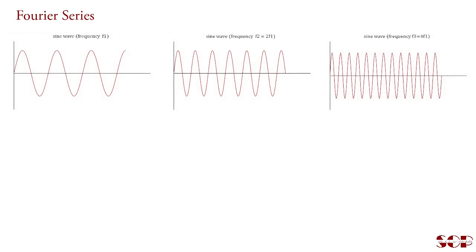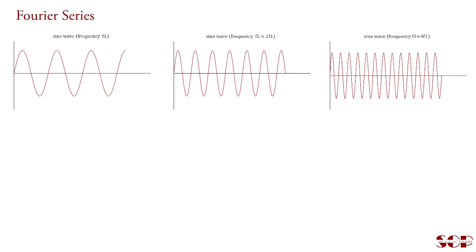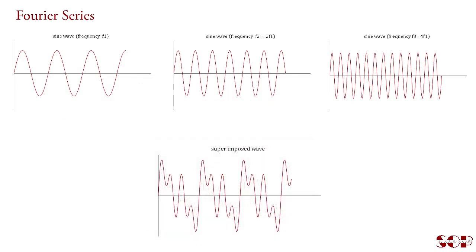Now suppose we have three sine waves with various amplitudes and various frequencies. The frequency of one wave is f1, that of the second wave is f2 equal to 2f1, and that of the third wave is f3 equal to 4f1. If they simultaneously superimpose on one another, then we get the resultant wave of this nature.